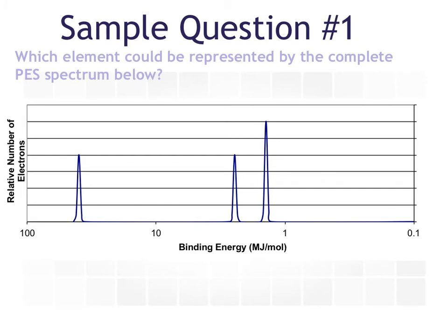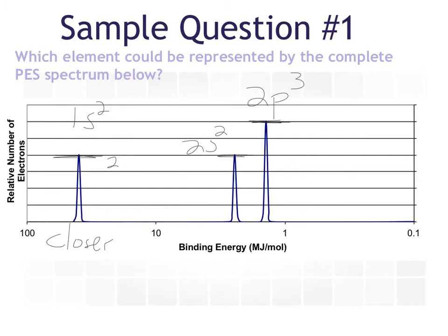Here's another one — what element could be represented? Now, notice these bars, these lines on the y-axis, do not represent individual electrons; it is a relative number. Closest to the nucleus is over here, and it might not always be that way — sometimes PES diagrams are not as standardized. This is still the 1S orbital because it's closest to the nucleus. So this height represents a height of 2: 1S2, 2S2, and this is just a little bit bigger. We know we're at 2P, a little bit bigger — it's not double, just a little bit bigger. So 2P3. We look that up on the periodic table and say, hello, nitrogen.